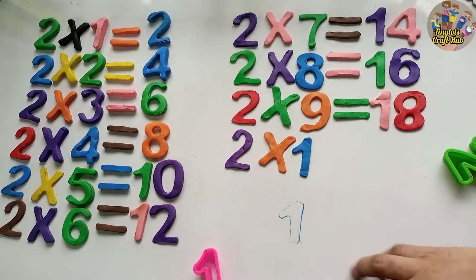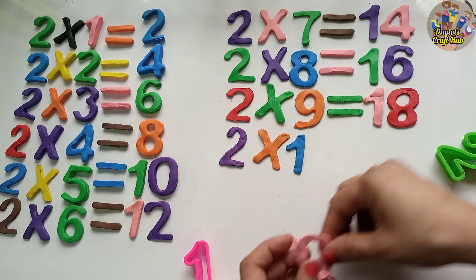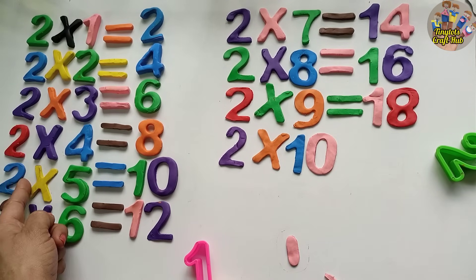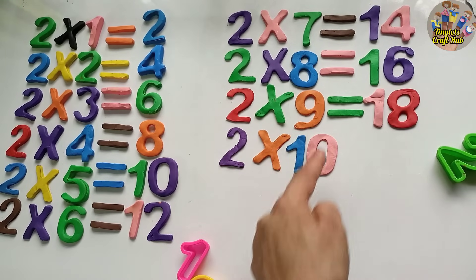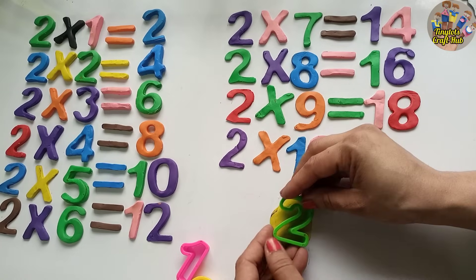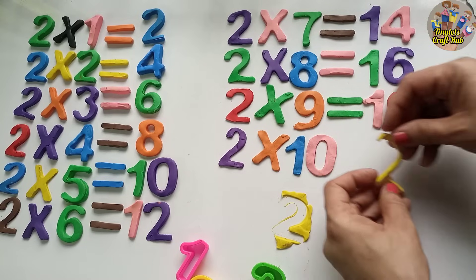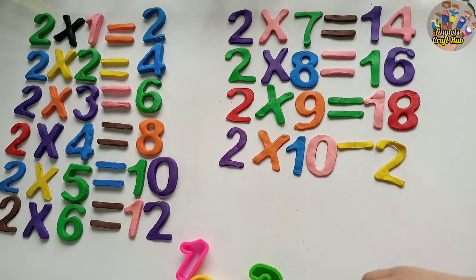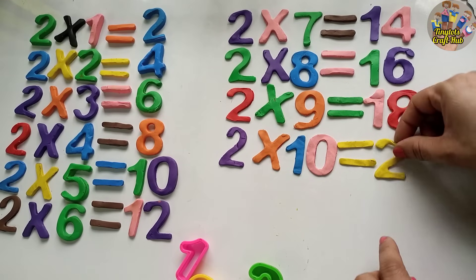Now we will do two tens. Two tens are equal to twenty. Let's add two ten times: two, four, six, eight, ten, twelve, thirteen, fourteen, fifteen, sixteen, seventeen, eighteen, nineteen, twenty. Two tens are equal to twenty. Another way: add two to the previous answer — eighteen plus two equals twenty. Two tens are equal to twenty.